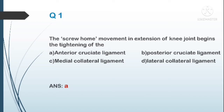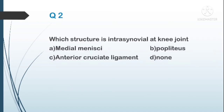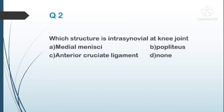The second question: which structure is intra-synovial at the knee joint? A) medial meniscus, B) popliteus, C) anterior cruciate ligament, D) none. The answer is D, none — because all the structures are intracapsular and extrasynovial.